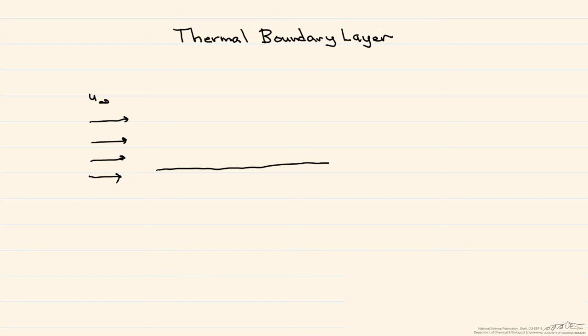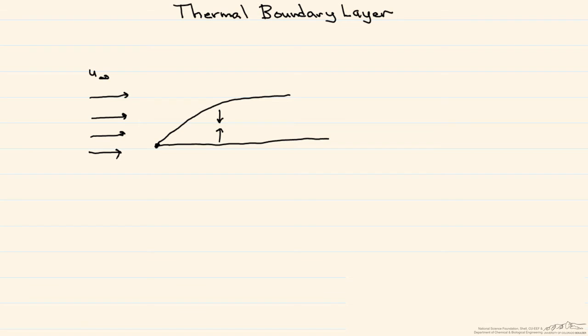As soon as it comes to the stationary plate, the particles right here take on the velocity of the plate. They are stationary themselves. What happens is a layer builds over this plate where the velocity is changing throughout this boundary layer.